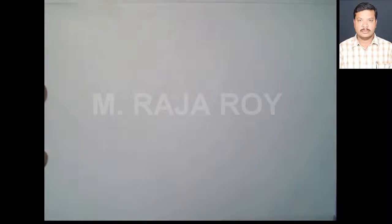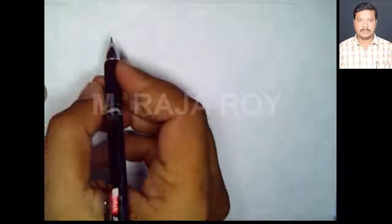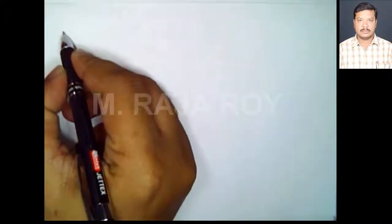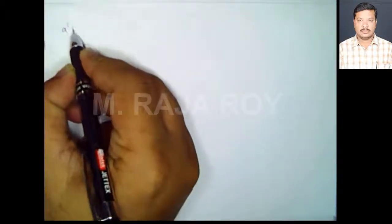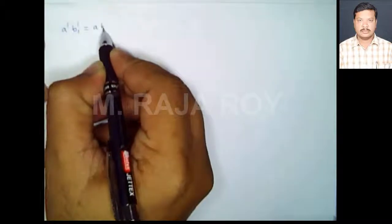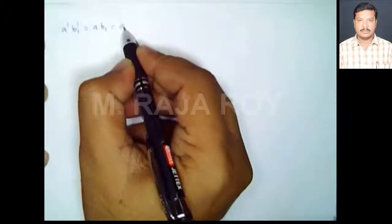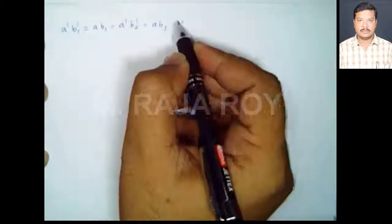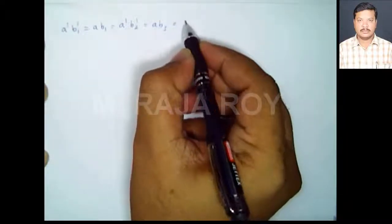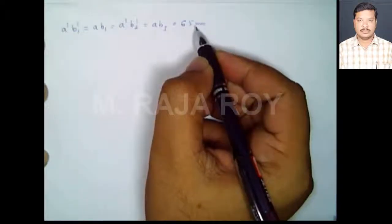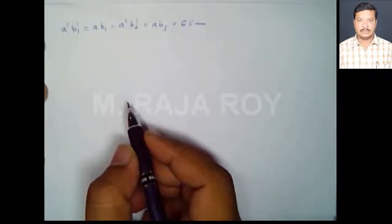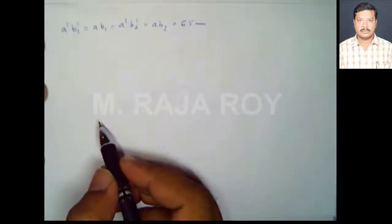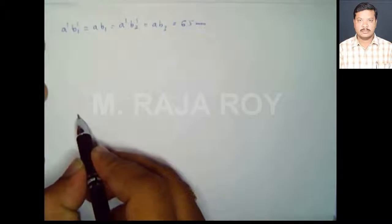This is worked example 5.5. The data given: a line AB of 65mm long, so the true length of the line is 65mm. According to our notation, a'b1' = a'b2' = a'b3' = 65mm. The end A of the line is 20mm above HP.